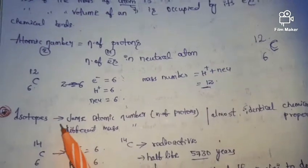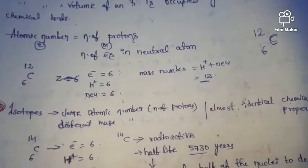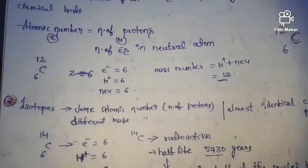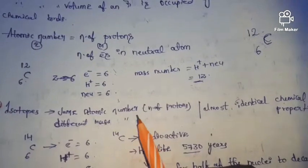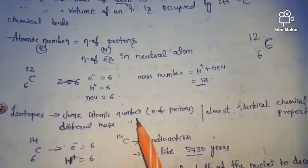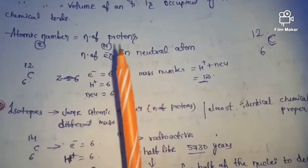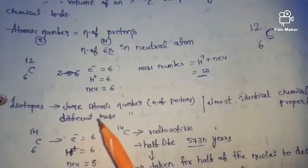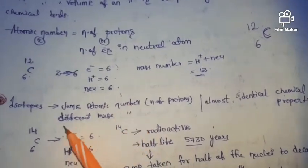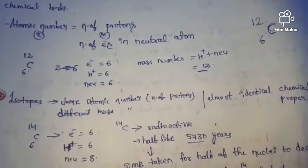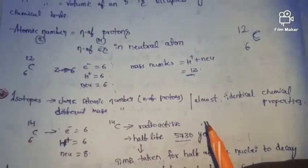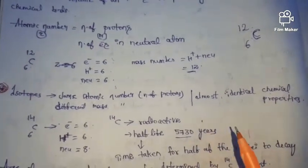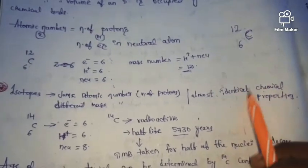Next, isotopes. Isotopes are atoms which have the same atomic number but different mass number. We can also say: atoms having the same number of protons but different mass number are considered to be isotopes. The important point to remember about isotopes is that isotopes have almost identical chemical properties.